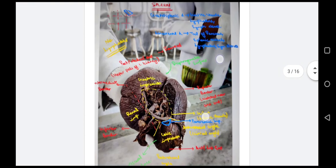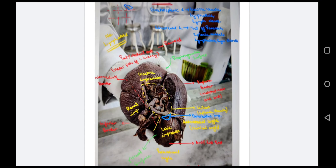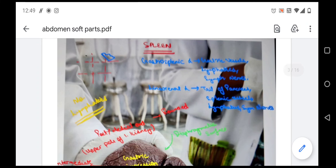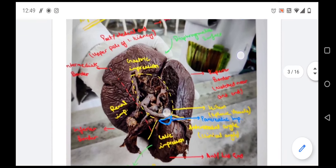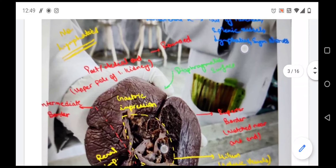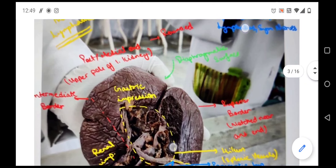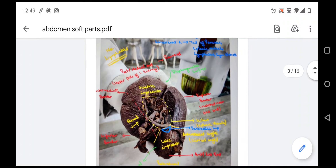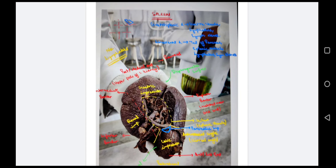After the stomach, we see the spleen. The spleen is located in the left hypochondrium and epigastric region. It has two ends: the anterior end, also known as the lateral end, and the posterior end, also known as the medial end. The posterior end is rounded and in direct contact with the upper pole of the left kidney. The spleen has two surfaces in the anatomical position: the diaphragmatic surface and the visceral surface.